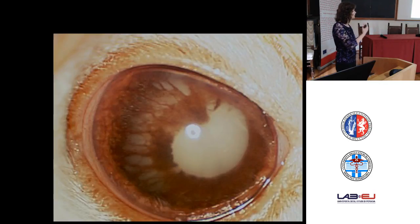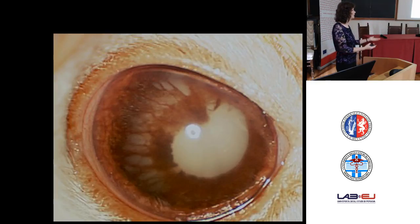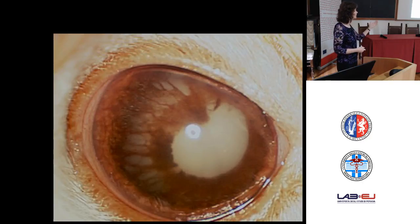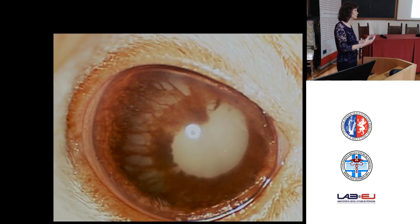Moving a little further into the eye — acquired atrophy of the iris can very much look like congenital hypoplasia. In an older animal, they are probably more sensitive to light as we lose stroma, but otherwise it is just an acquired change seen in older animals.